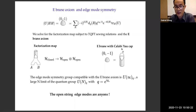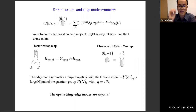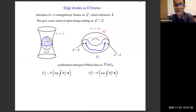If you solve the sewing relations with this E-brane condition, you find that the edge-mode symmetry group is not U(infinity). It is a Q-deformed version of the large-N limit of U(N), where Q is related to the string coupling in this way. This tells you that the open string edge modes are anyons, because U(N)_Q is the symmetry group of anyons.